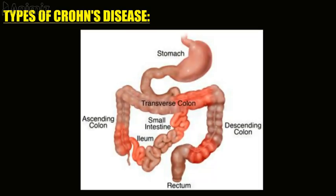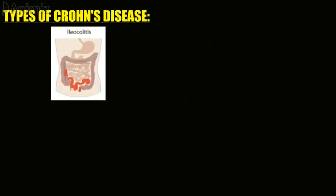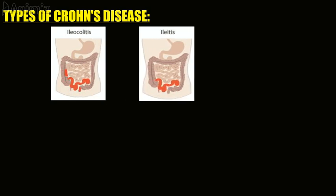There are several different types of Crohn's disease, categorized by the area of the digestive tract affected. Ileocolitis is the most common form of Crohn's disease. It affects the end of the small intestine as well as the large intestine. Ileitis is a form of Crohn's disease that affects only the ileum.